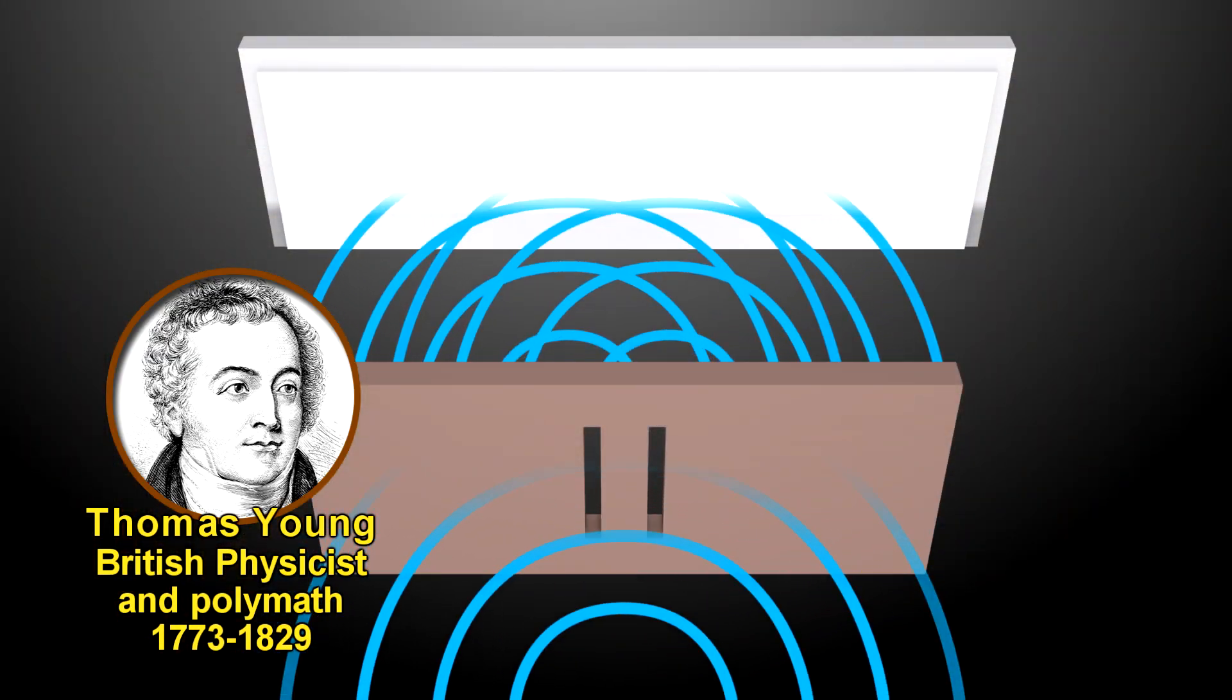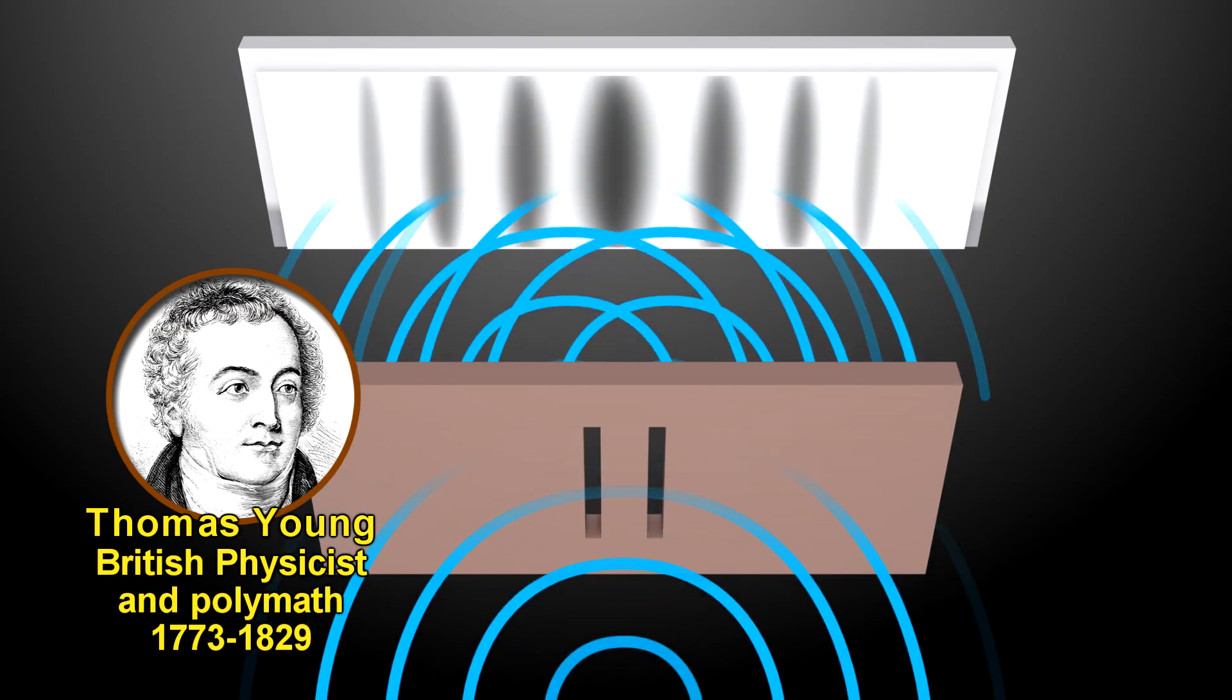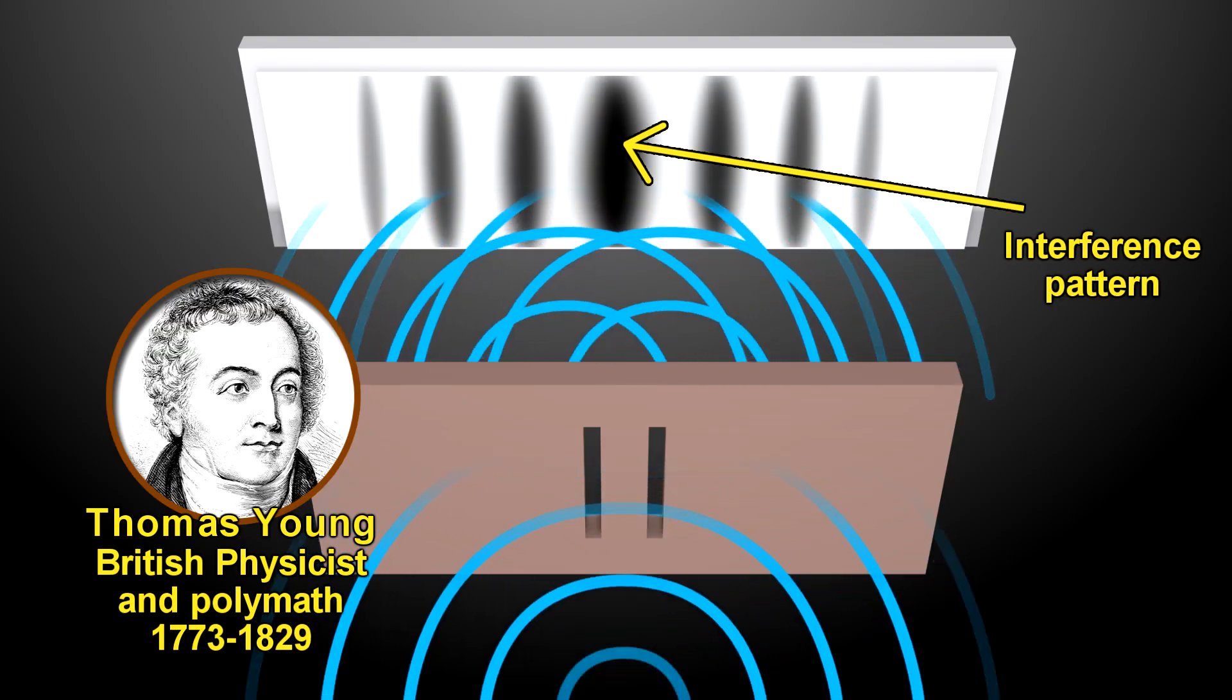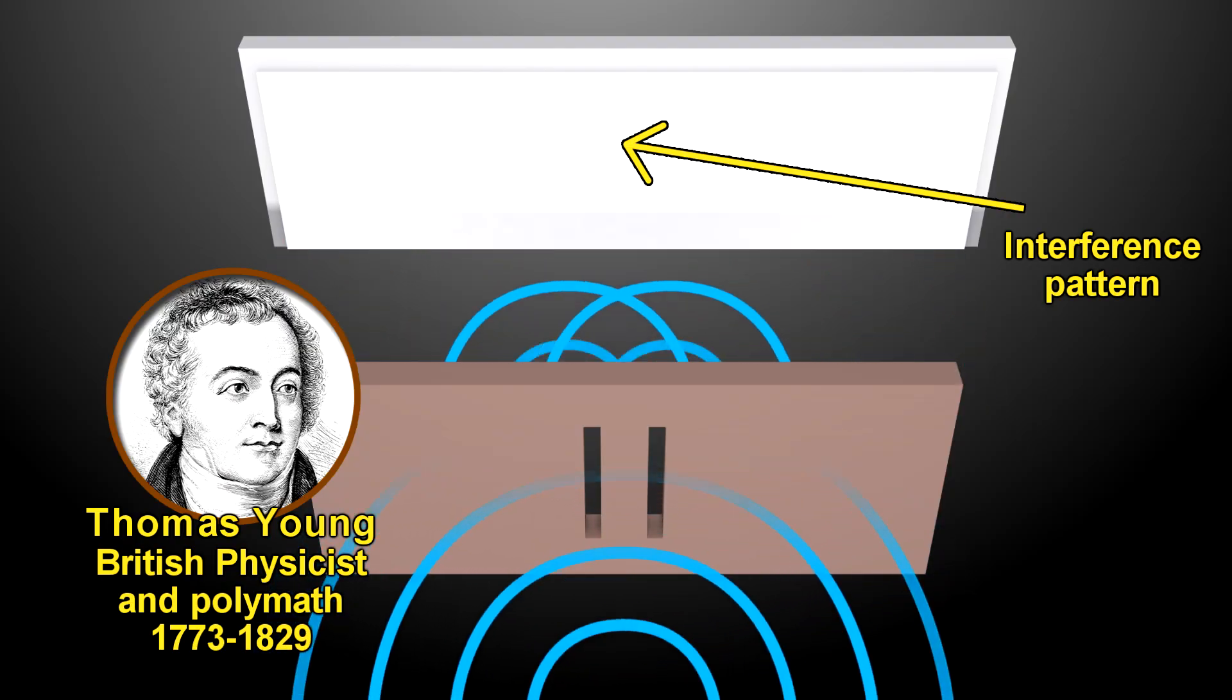In 1801, British physicist Thomas Young performed a simple double slit experiment, which showed that light was a wave, because it formed an interference pattern as a wave would. So for most of the 19th century, light was considered a wave.